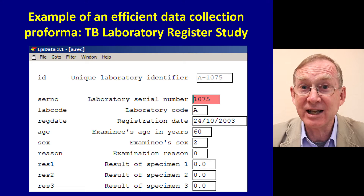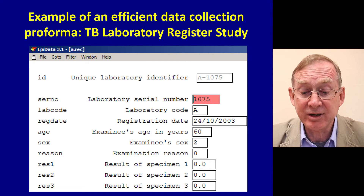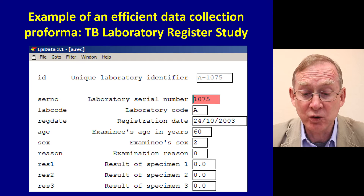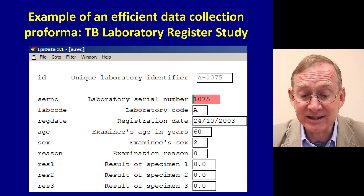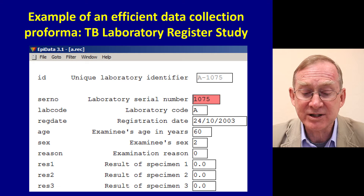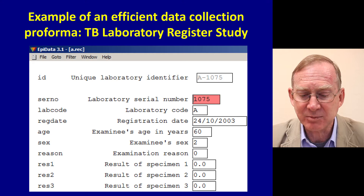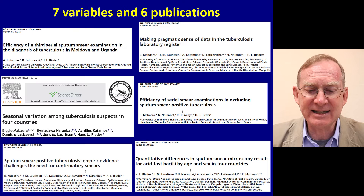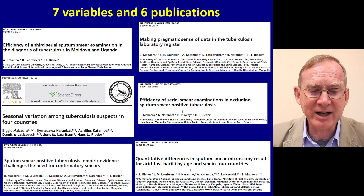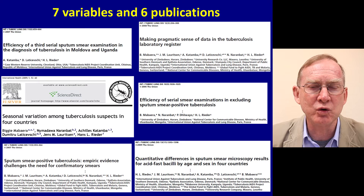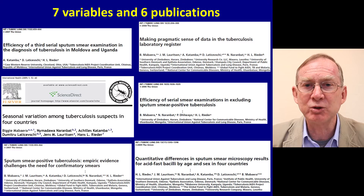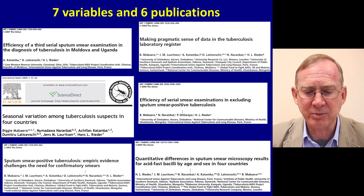You can see this was his data collection form. He had a laboratory serial number, a laboratory code, registration date, the examinee's age in years, the examinee's sex, the reason for the examination, and then result of specimen one, result of specimen two, and result of specimen three. With that simple data set, Dr. Hans Reeder and his colleagues wrote six very important papers that changed the thinking around how we should collect sputums for sputum smear examination in pulmonary tuberculosis.